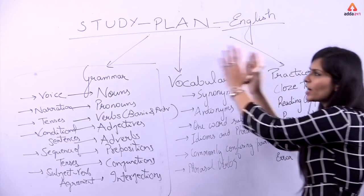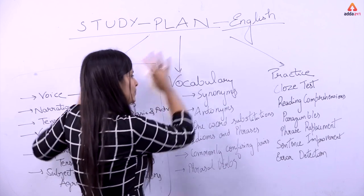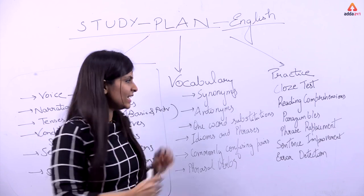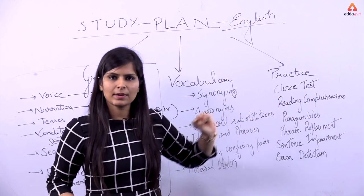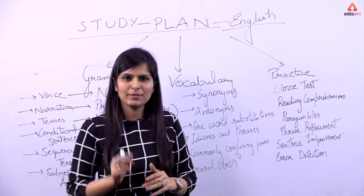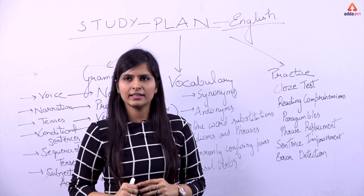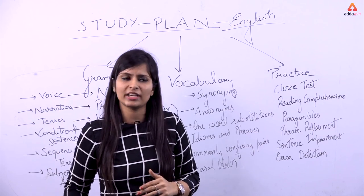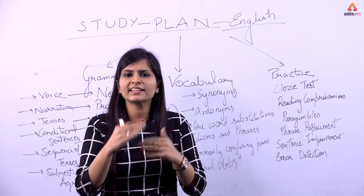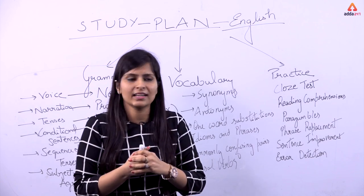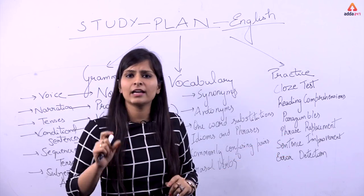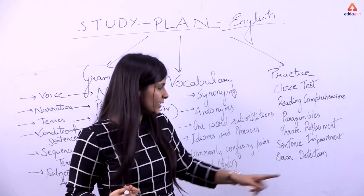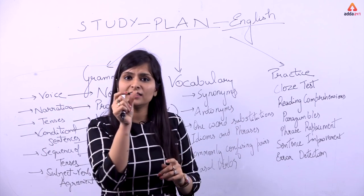This is our entire English syllabus. If I have command over all these topics, that means I am ready to give my exam. In a cloze test, you are given a passage with blanks in between and you have to fill those blanks with the correct word. In reading comprehension, you are given a passage and asked questions based on it. In parajumbles, you arrange sentences to make a coherent and logical paragraph. In phrase replacement, you replace a given phrase with a better one. In sentence improvement, you improve a given sentence. In error detection, you have to find the error in the sentence.